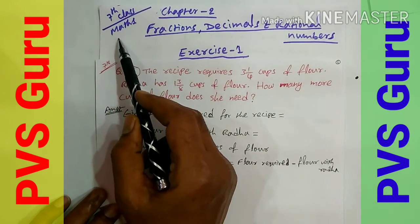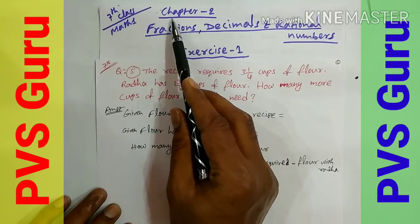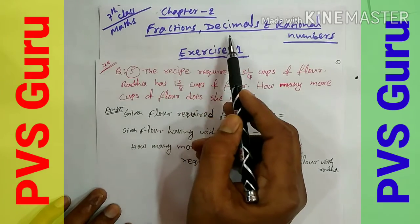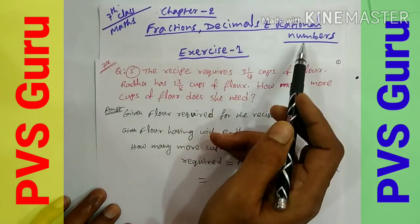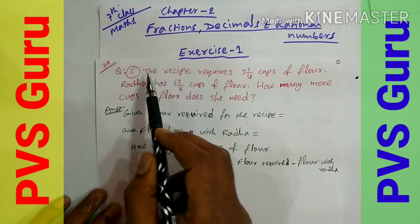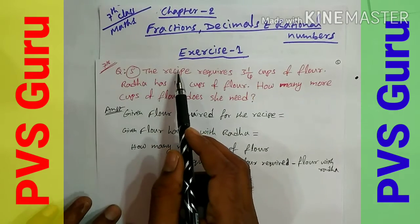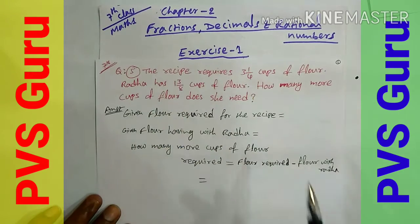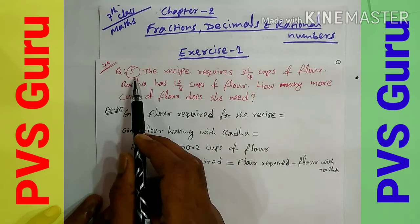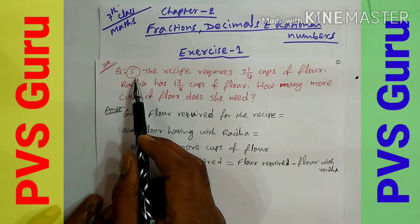This is 7th class Maths chapter 2, Fractions, Decimals and Rational Numbers, Exercise 1. Questions 1 to 4 have been explained in previous videos. Now I am going to explain questions 5, 6, and 7 in this video.